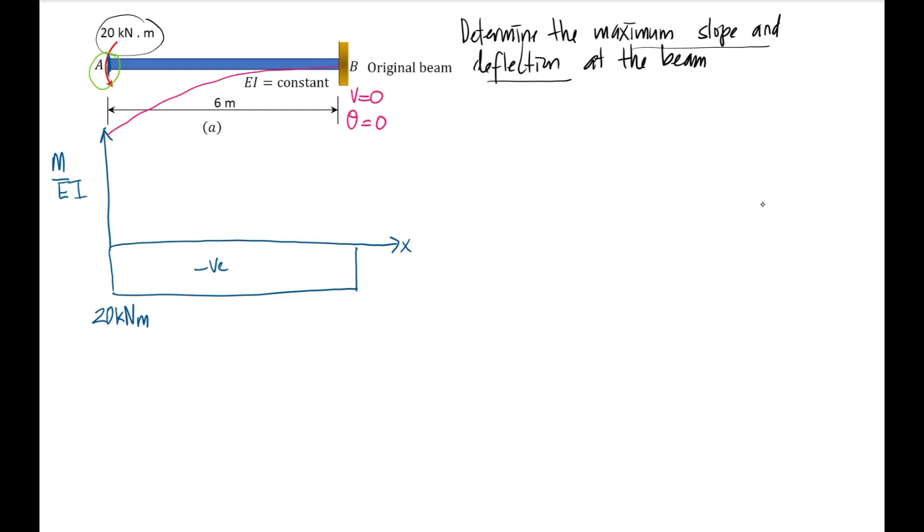We need to find the slope based on two tangents. So let's say we draw the tangent line here. This will be tangent A, and then you will have the reference tangent based on here. This I call the reference tangent.